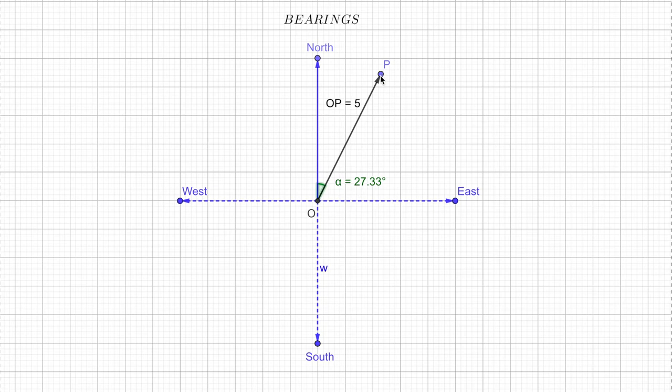For example, in this case if I change the location of point P, let's say point P is here, so as you can see if I maintain the distance 5 units, as you can see OP is 5, but if I change the location of point P, the value of alpha, this angle, is changing.